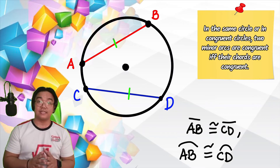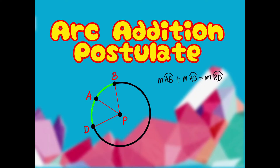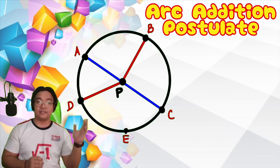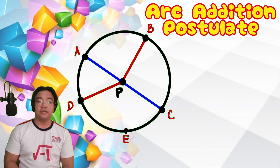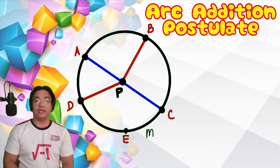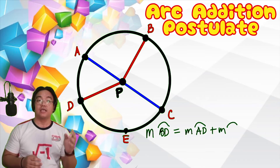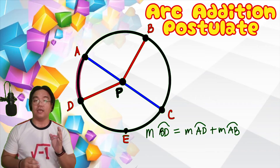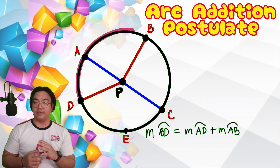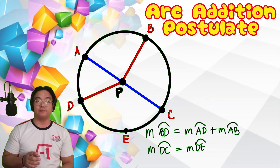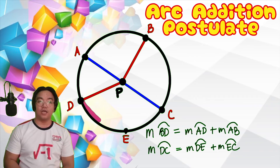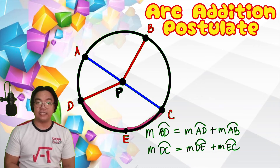Lastly, the arc addition postulate. In this given figure, arc BD can be obtained by adding the measures of arc AD and arc AB. Similarly, the measure of arc DC can be obtained by adding arc DE and arc CE.